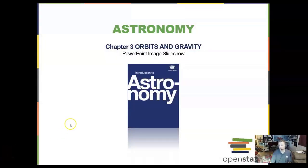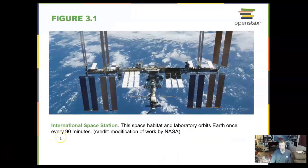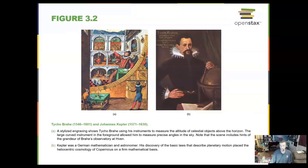This is the chapter three lecture video on orbits and gravity. Here we have the International Space Station, an international laboratory of science that orbits the Earth every 90 minutes. It is in an orbit about 320 miles above Earth.